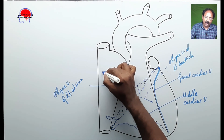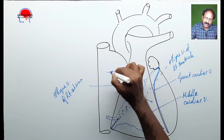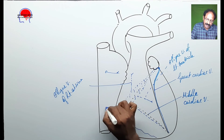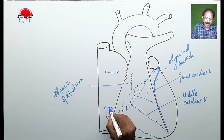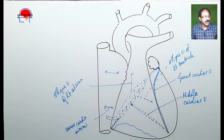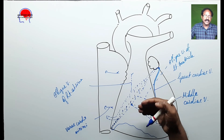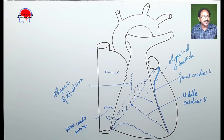There are also some small veins which are directly draining into all the chambers, named as vene cordis minimae. These vene cordis minimae are numerous in number and they drain into all the chambers of the heart.